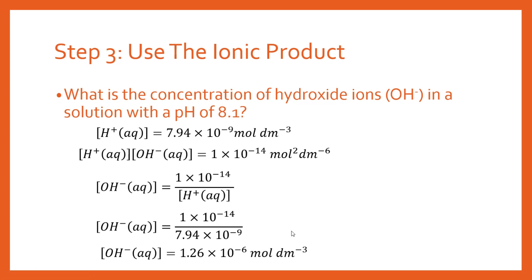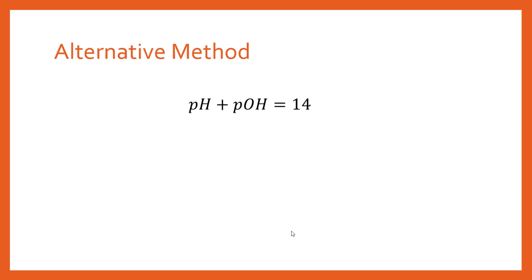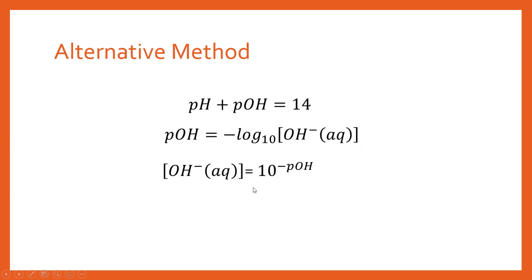That is your hydroxide ion concentration. This is one way of doing it. There is an alternative method, which is to say that pH plus pOH equals 14 — that's true for pure water. The pOH is simply the minus log to the base 10 of the hydroxide ion concentration, which of course can be rearranged in the same way as the normal pH equation.